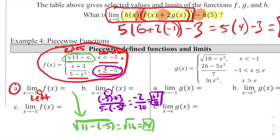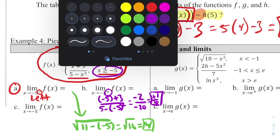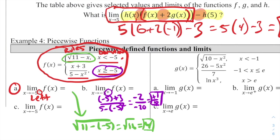Part C: the overall two-sided limit as x approaches −5. The left-hand limit was 4 and the right-hand limit was 1/10. Since these are not equal to each other, the overall limit does not exist.